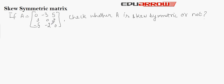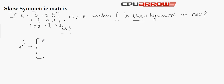Now let us consider an example to understand this. In this example, it is given that there is a matrix A of order 3 by 3, and we have to check whether A is a skew symmetric matrix or not. First we will check whether it is a square matrix. The number of rows and number of columns are equal, hence it is a square matrix. Now we will find out the transpose of matrix A by interchanging the rows into columns and columns into rows.